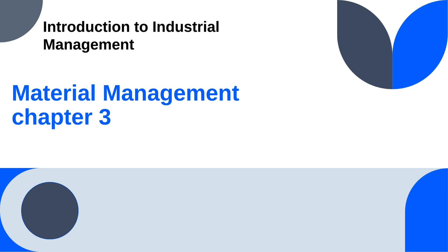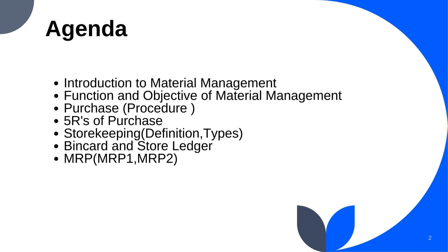Hello guys, welcome to Mac Out Smashers. Today's video topic is all about material management in industrial management — chapter number 3. In this topic we discuss about the introduction to material management, the functions and objectives, the purpose and its procedure, the five Rs of purchasing, store keeping definition and types, bin card and store ledger, and MRP — MRP 1 and MRP 2.